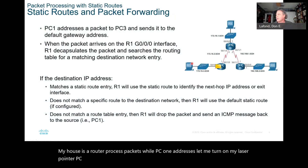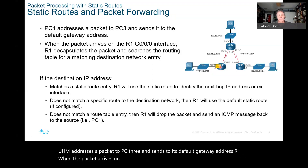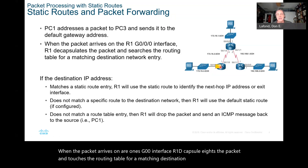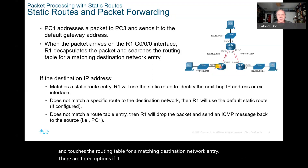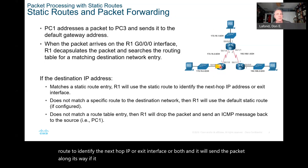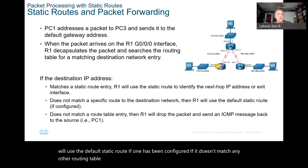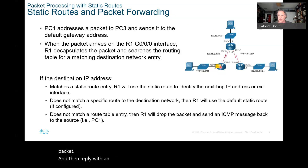PC1 addresses the packet to PC3 and sends it to its default gateway, R1. When the packet arrives on R1's G0/0 interface, R1 decapsulates the packet and searches the routing table for a matching destination network entry. There are three options: if it matches a static routing entry, R1 will use the static route to identify the next hop IP or exit interface and send the packet. If it does not match a specific route, R1 will use the default static route if configured. If there's no match and no default static route, R1 drops the packet and replies with an ICMP message back to the source.